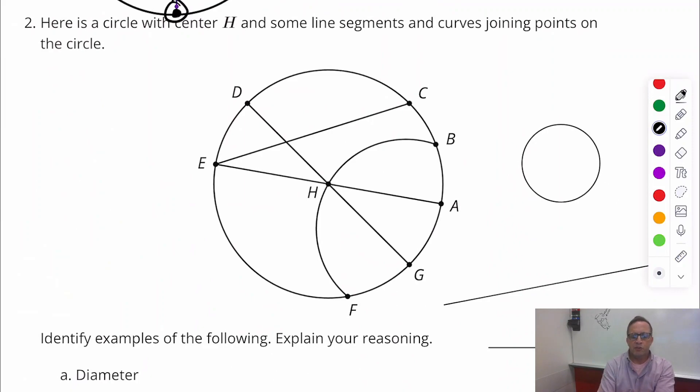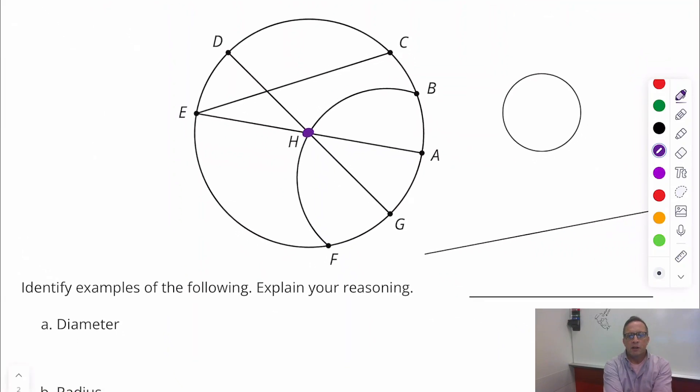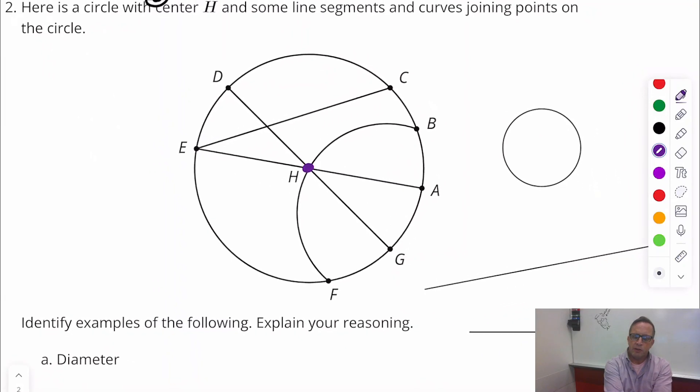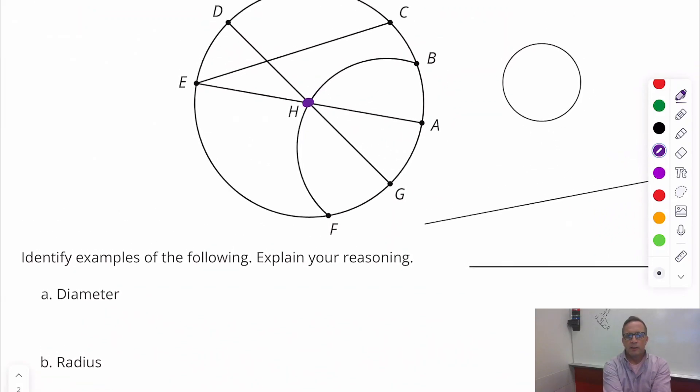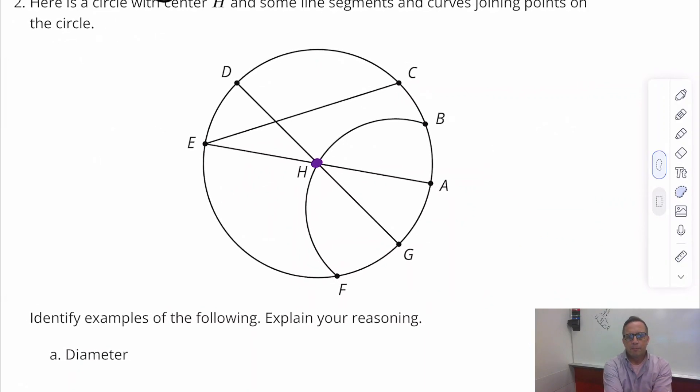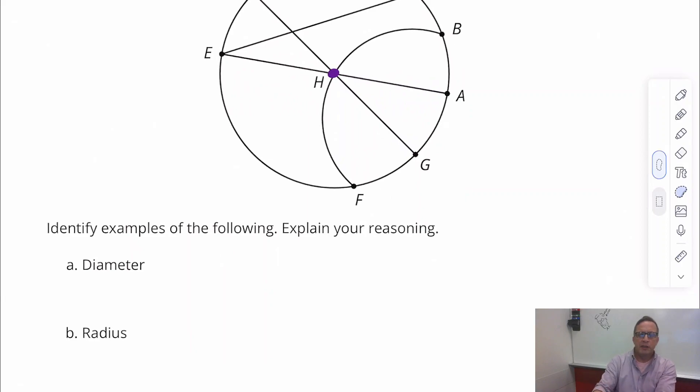Alright, for number two, here is a circle with center H. A lot of times circles, that's how circles are named. Circles are named by the middle letter. This one, the respective middle letter is H, so we can call that circle H. And some line segments and curves joining points on the circle. Alright. Identify examples of the following. Explain your reasoning. So, diameter.